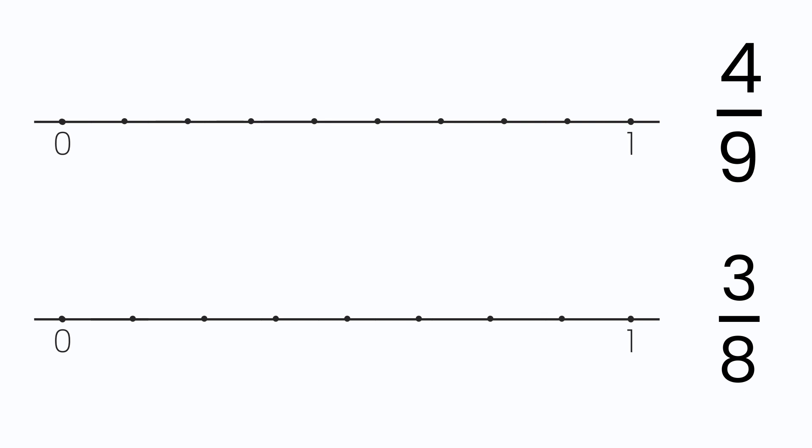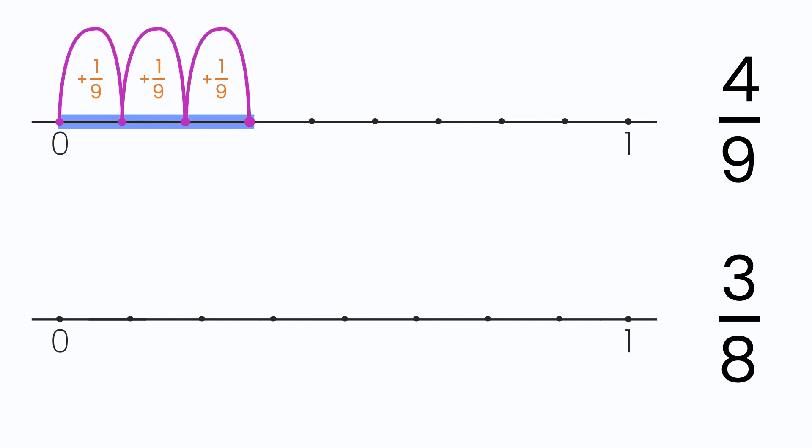Where do you place four-ninths? You start at zero and jump as many places as the number of the numerator, meaning four places. You land here.